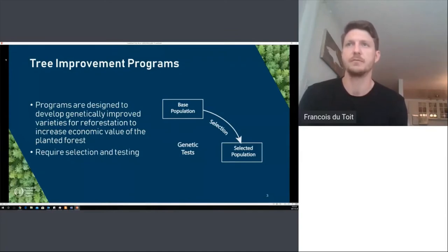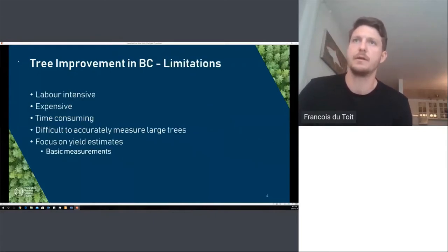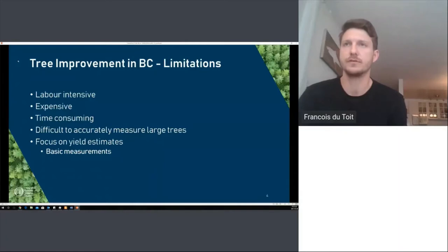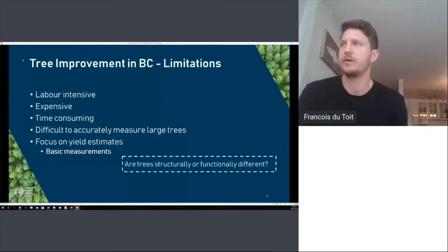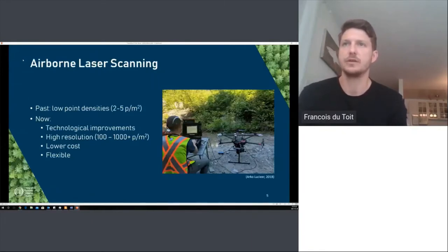Trees are selected by taking measurements of observable characteristics, also known as phenotyping, and tested in a variety of settings to confirm that predicted gains are real. Tree improvement is currently successful but there are limitations: it's labor intensive, expensive, and time-consuming. Once crown closure has occurred it's difficult to measure large trees accurately. Programs focus on just height and DBH, so we don't really know whether trees are structurally or functionally different from one another.